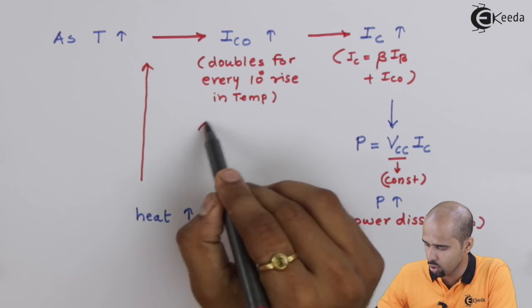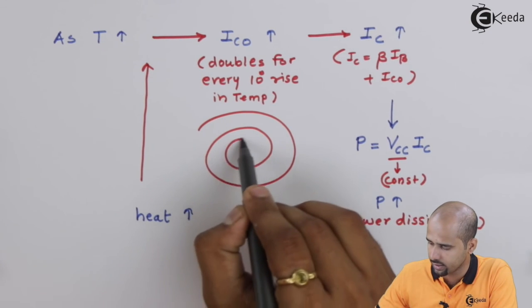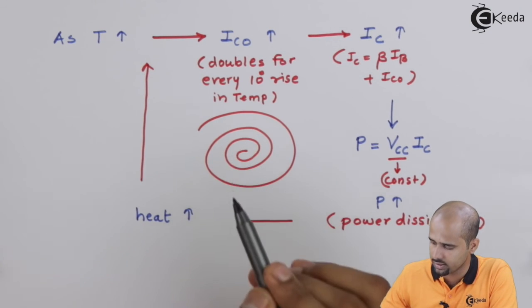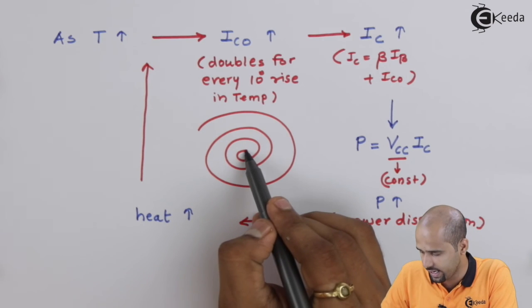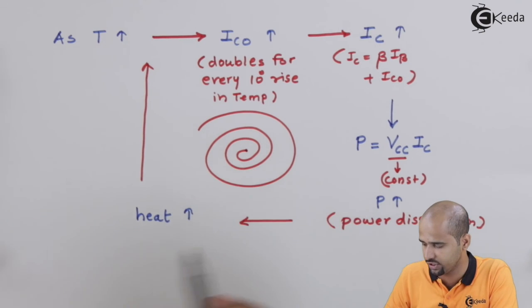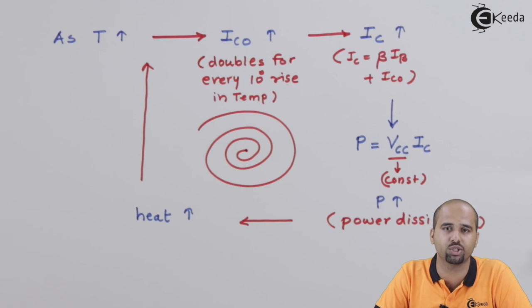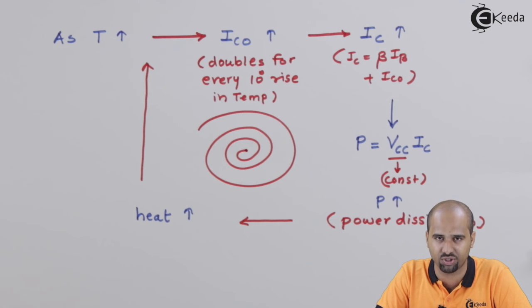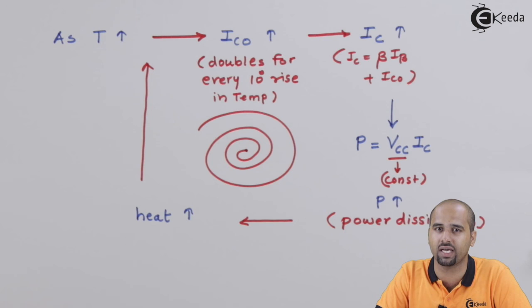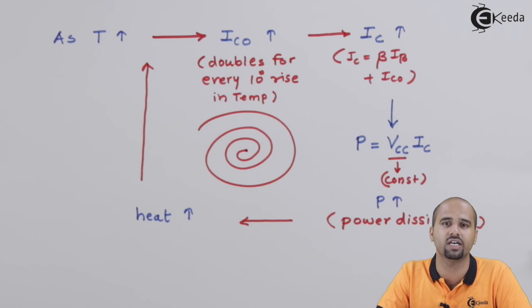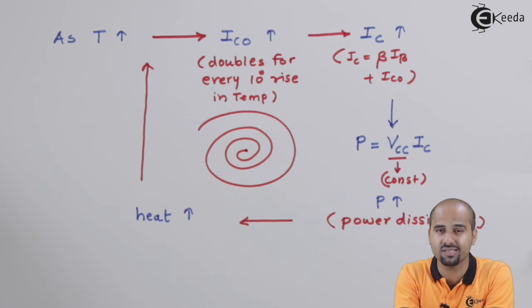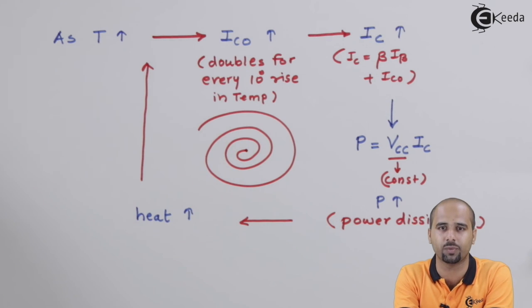This cycle goes on, increasing and increasing, and eventually this leads to damage to your BJT, overheating it. That is why we must take care of thermal runaway parameters from a design perspective. This is a very important question for your viva.